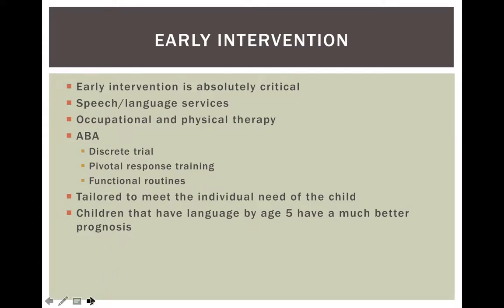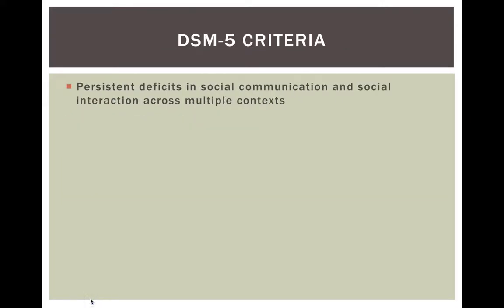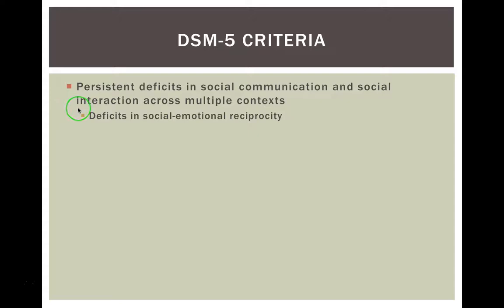Children who have language by age five have a much better prognosis overall. Now we'll get into the DSM-5 criteria and how we make decisions on whether someone meets the diagnostic thresholds for an autism spectrum disorder. The first criterion is persistent deficits in social communication and social interactions across multiple contexts. The first subcategory is deficits in social-emotional reciprocity, which the most recent research is showing to be really the core deficit of autism spectrum disorders.